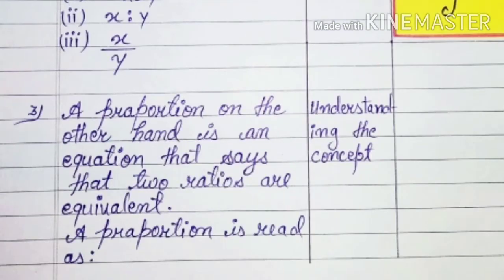After that, we will define the proportion. Proportion is an equation that says that two ratios are equivalent. When we have two ratios that are equivalent or equal, then our proportion will become the proportion.